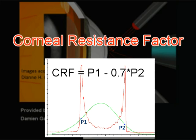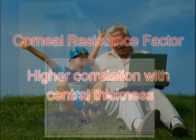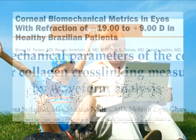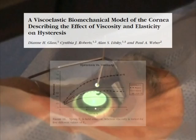Corneal resistance factor is an empirical function also calculated from P1 and P2. There is a negative correlation of CH and CRF with age, and there were no changes in CH one year after collagen crosslinking of the cornea. Thus, there are examples of low CH in both stiff and soft corneas.